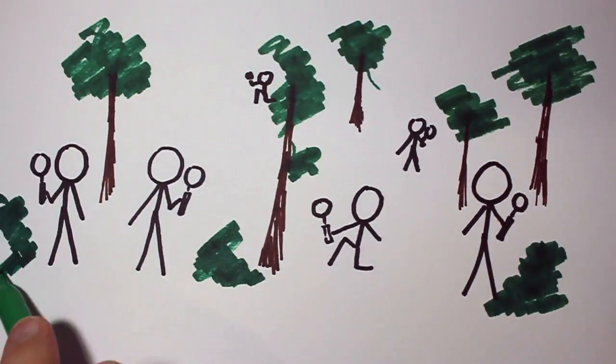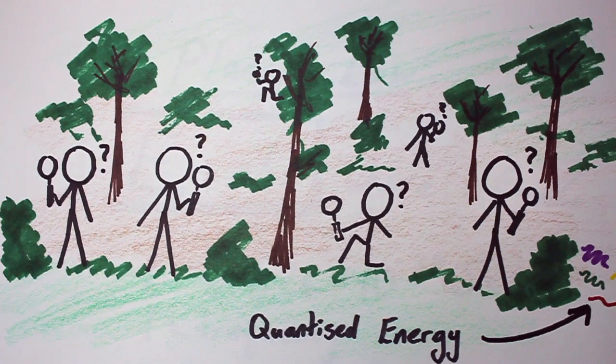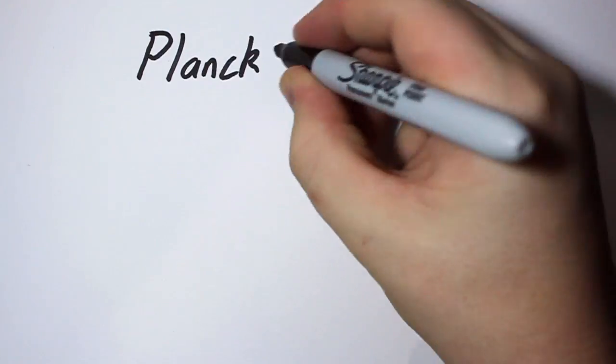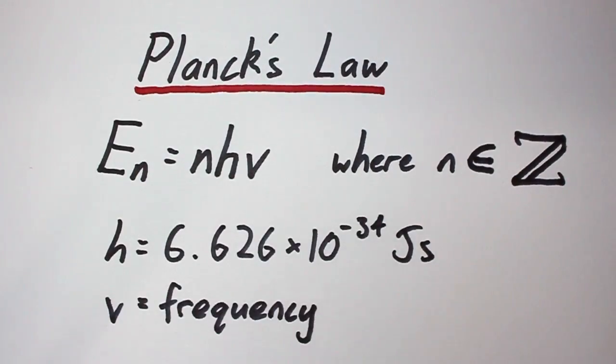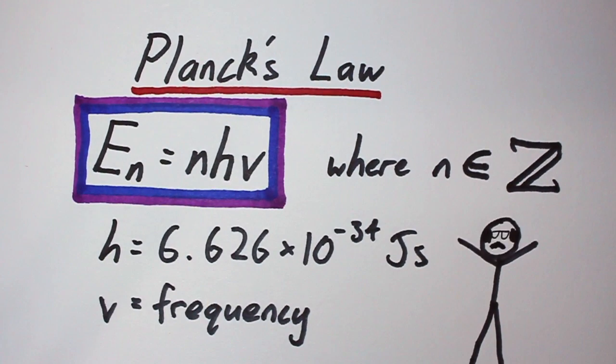This explains why physicists hadn't discovered the packet-like nature of energy. The packets were just way too small. Planck derived the formula En equals nhv, where n is an integer, and laid his findings to rest, happy that the maths was right.